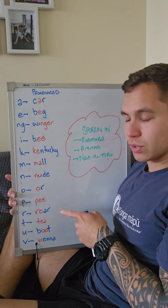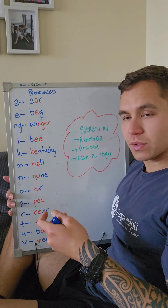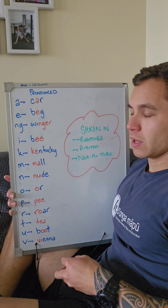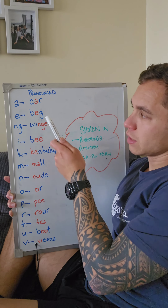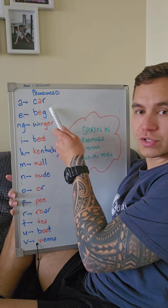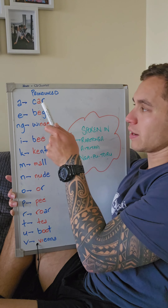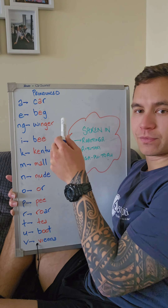These English words here are to help you with the pronunciation. The best way to do this is to say the whole word first, and then just the letter or letters that are in red.